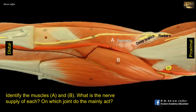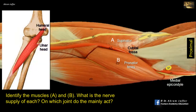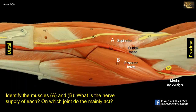B is the muscle that forms the medial boundary of the cubital fossa. It is the pronator teres muscle. Note that the muscle passes obliquely from the medial epicondyle of the humerus, where the superficial head is attached. Some fibers from the medial head, attached to the ulna, are not shown here. So the muscle has two heads.